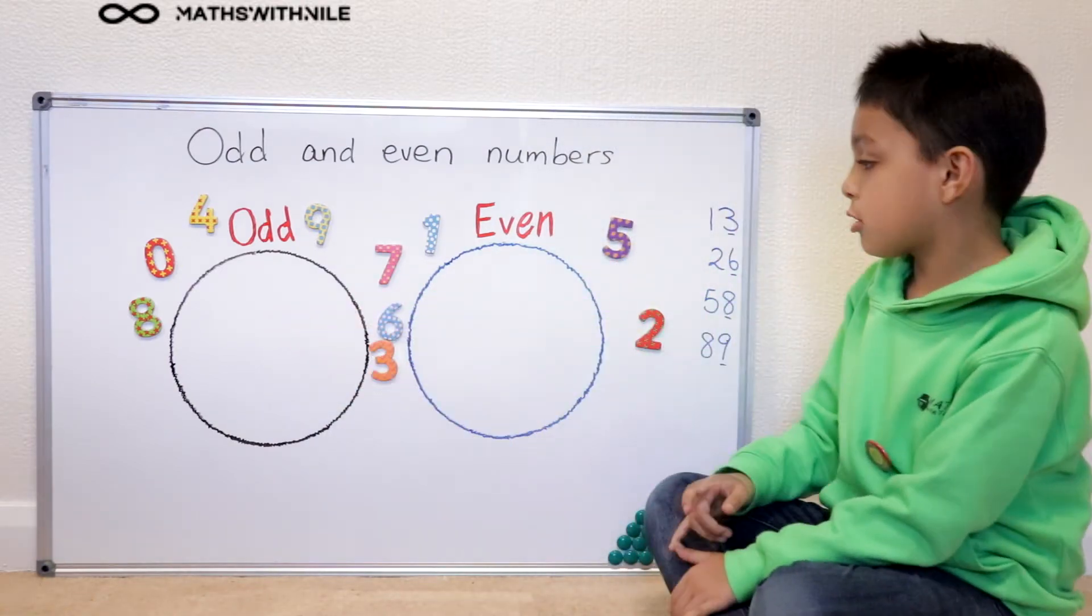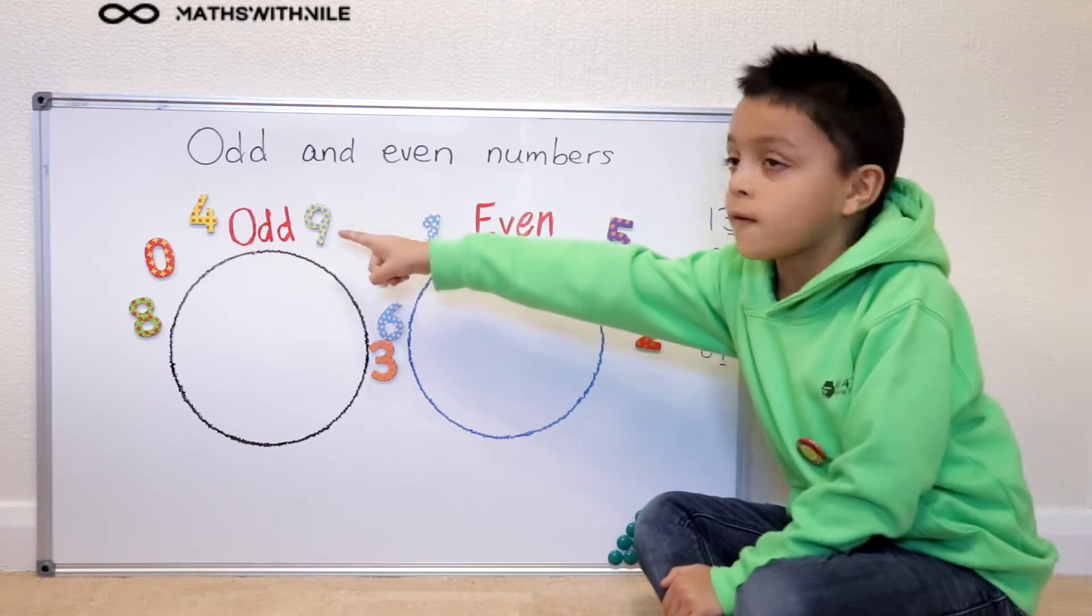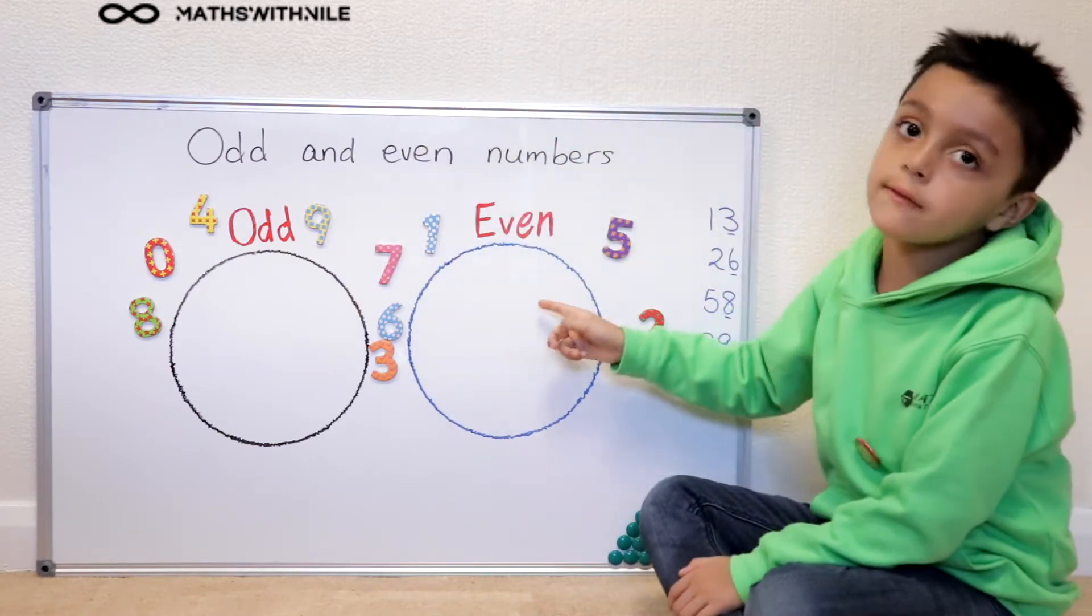We got our two circles to put our numbers in. So that one's for odd numbers and this one's for even numbers.